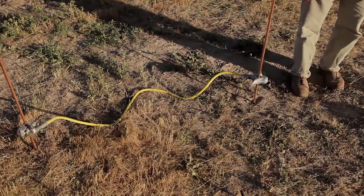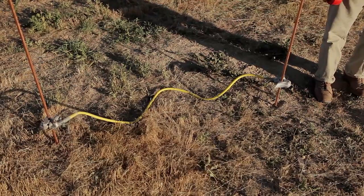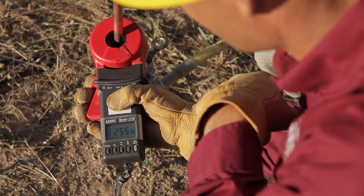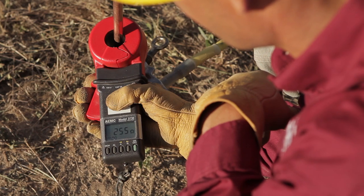But what if you can't drive the ground rod as deep as you'd like? Your next option is to parallel multiple ground rods together. I paralleled the one and a half foot and three foot ground rods and got a resistance of 255 ohms, which is less than either of them individually.